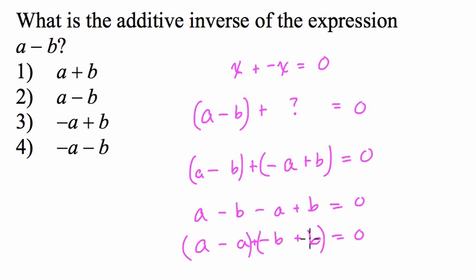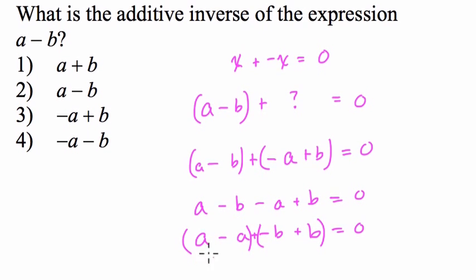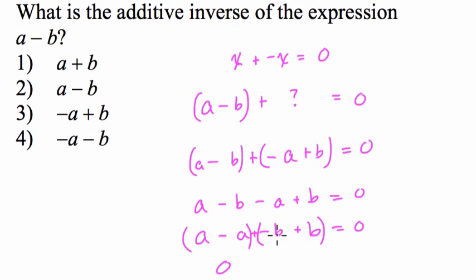So a minus a is zero, negative b plus b is zero, and zero plus zero is zero. This works.